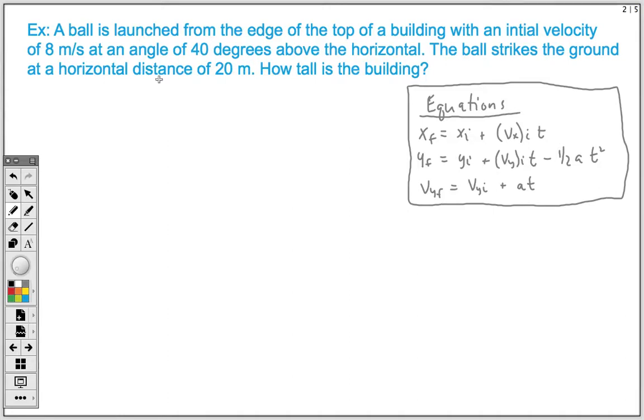We're going to assume that the building is completely vertical and that our ground is completely horizontal. One of the first things that I always do when I solve for these types of problems is I go ahead and draw a picture for myself. I think it's just a good way to visualize what's going on.